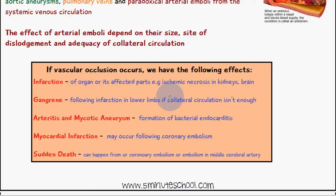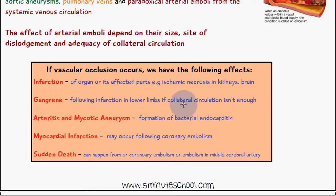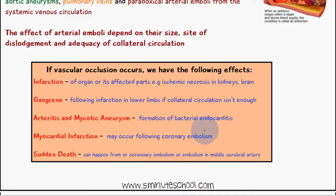An example of infarction is ischemic necrosis in the kidney or the brain. The next step following on from this is gangrene, which follows infarction — an example is in the lower limbs if collateral circulation isn't enough to compensate. The next step can be arteritis and mycotic aneurysm, which can include the formation of bacterial endocarditis.